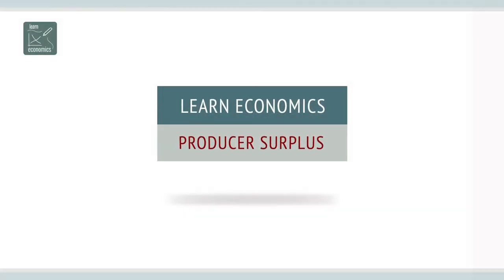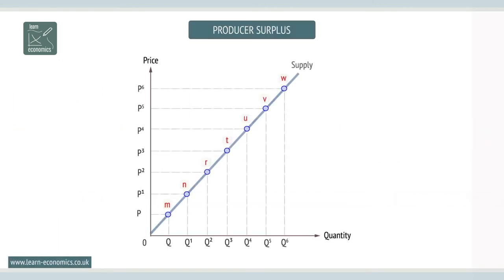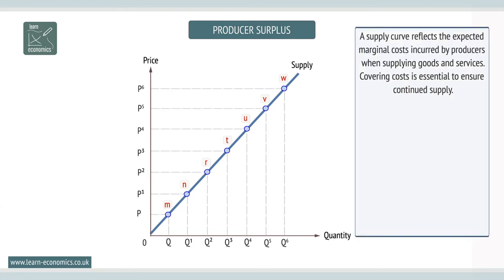Producer surplus is the additional benefit to producers when the price they receive is more than the minimum they are prepared to receive. A supply curve reflects the expected marginal costs incurred by producers when supplying goods and services.